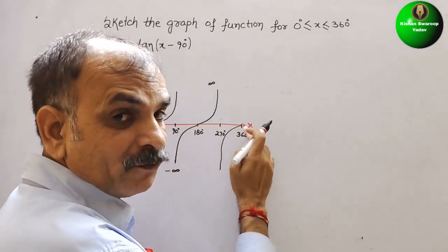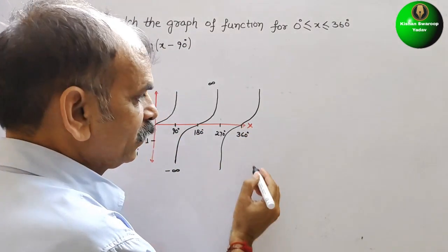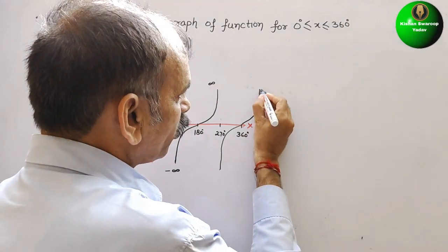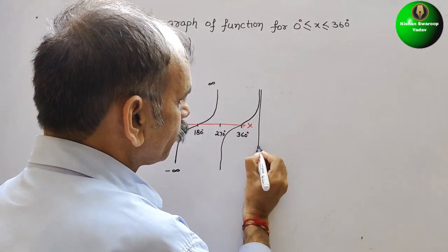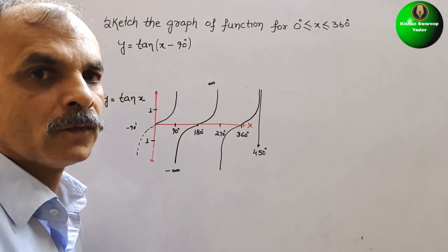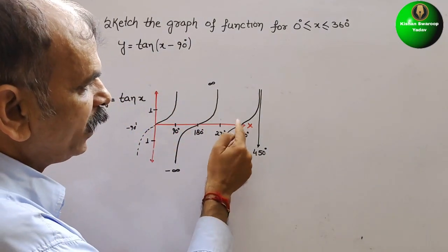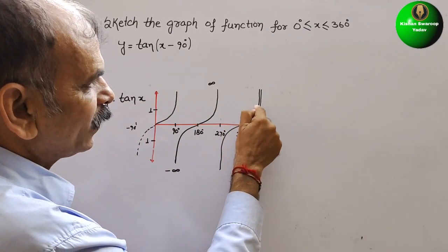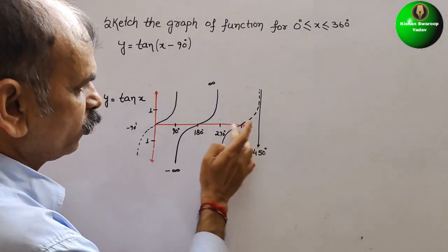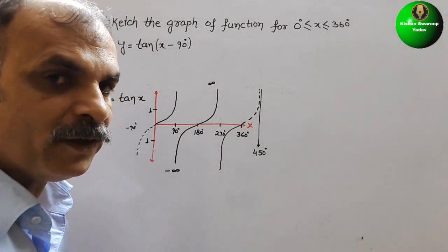After 360° it will go to your peak, that is infinity. The gap is 90°, so that means this point here is your 450°. So this is the graph of tan. We can see: this is half only, and this is full. So you can make this as a dotted line. Your actual graph from 0 to 360 is this only. Now what they have given is x minus 90.